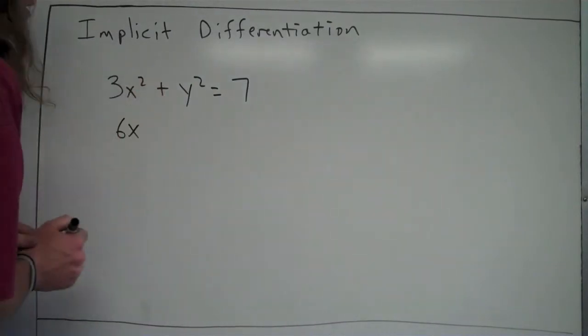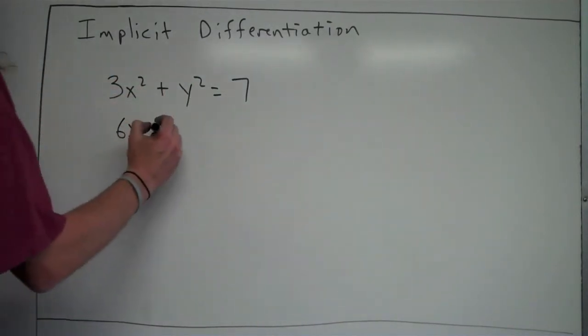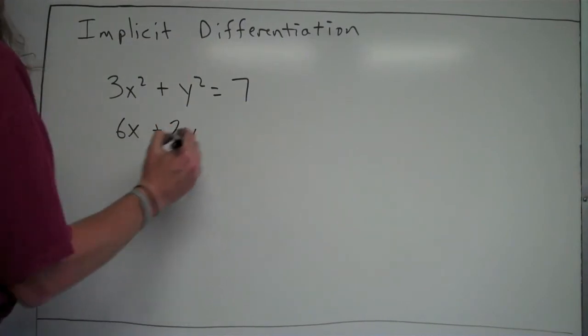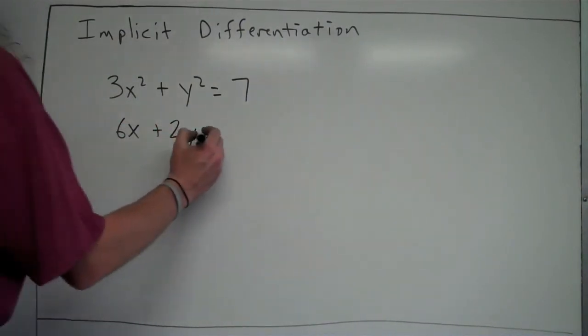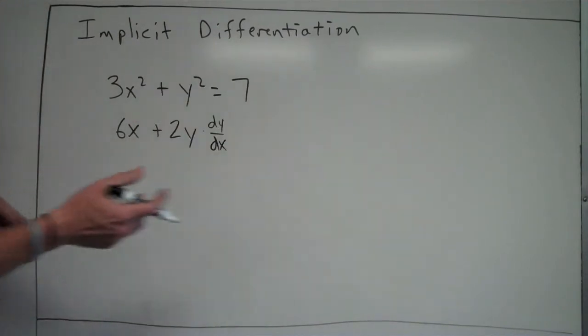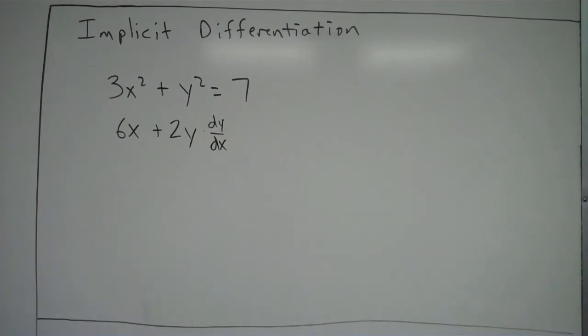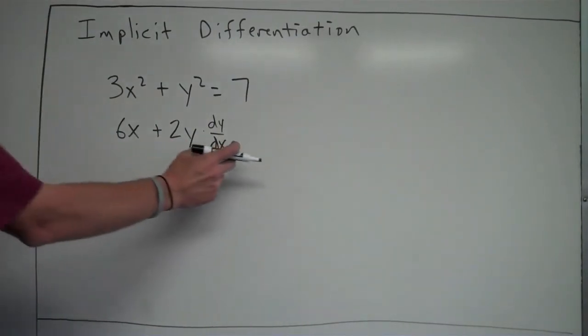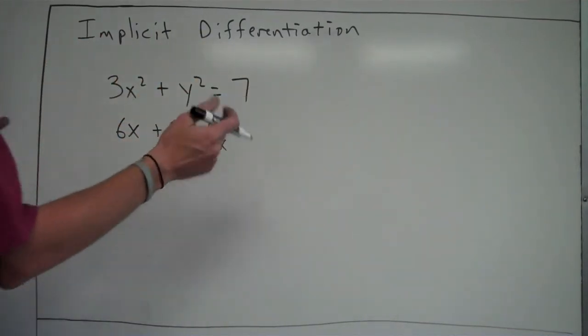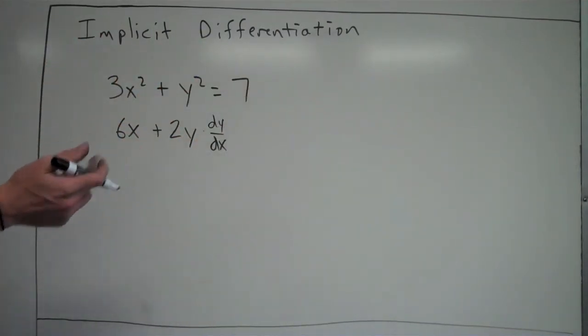When I move on to my y terms, I initially take the derivative like normal, so the derivative of y squared is going to be 2y, but then whenever I take the derivative of y, I'm going to multiply by dy over dx. The reason why I'm doing that is because of the chain rule. We're considering y its own function of x, and therefore dy over dx is basically kind of like the derivative of the inner function, y is the inner function, and so the derivative of y is dy over dx.